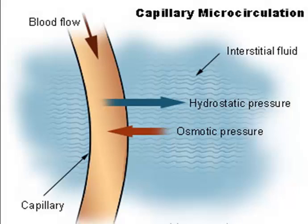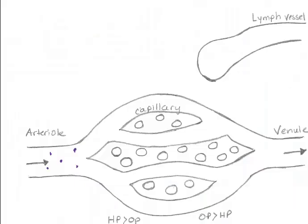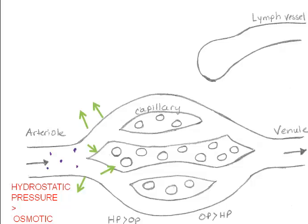At different locations in the capillary bed, the net forces will influence the direction of fluid movement. At the arterial end, blood is under high pressure because it has just come from the heart. Blood pressure is higher than osmotic pressure of the blood, so fluid is forced out of the blood, leaving solutes behind. This increases the solute concentration of the blood as fluid moves out.